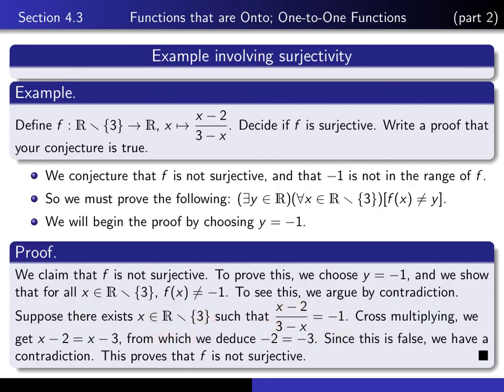If you cross multiply, you get x minus 2 equals x minus 3. Crossing off the x's, you deduce that minus 2 equals minus 3, which is impossible. And therefore, we have a contradiction. And that proves that f is not surjective. And that completes the proof.